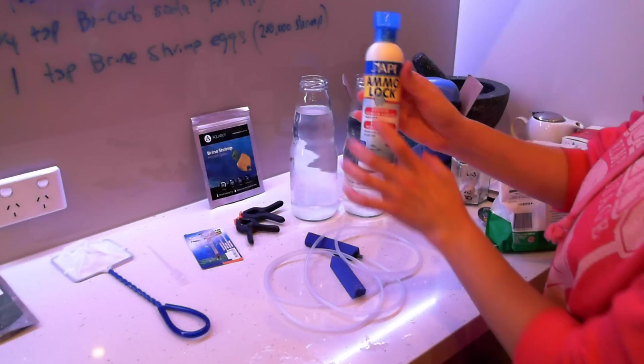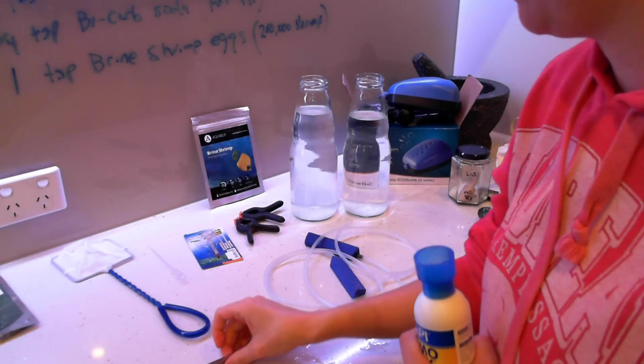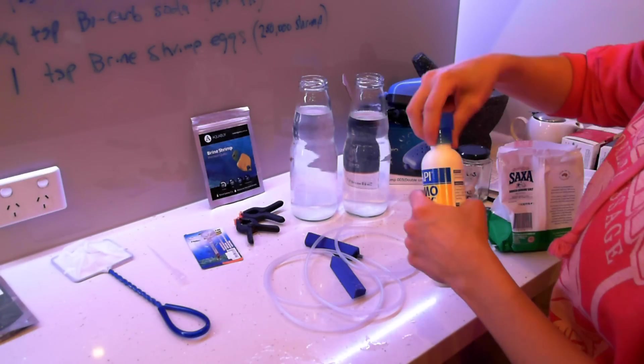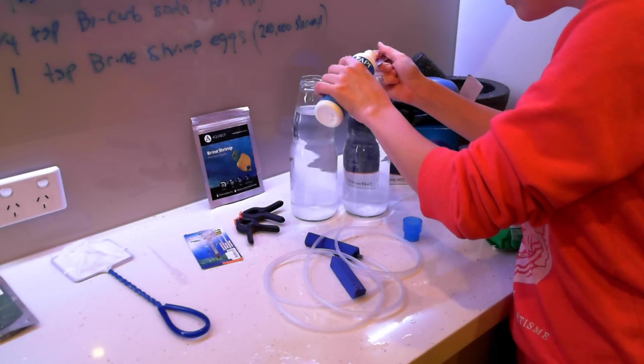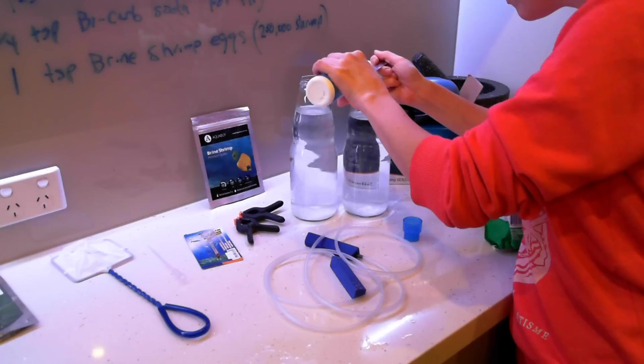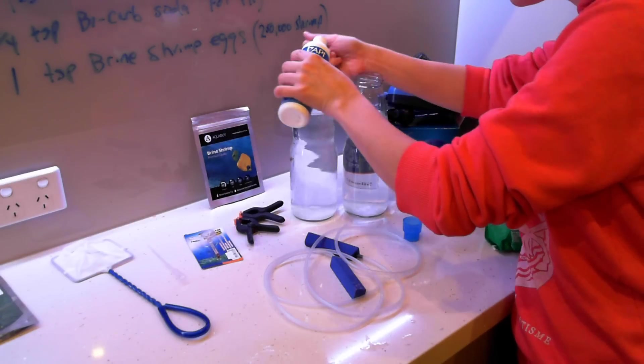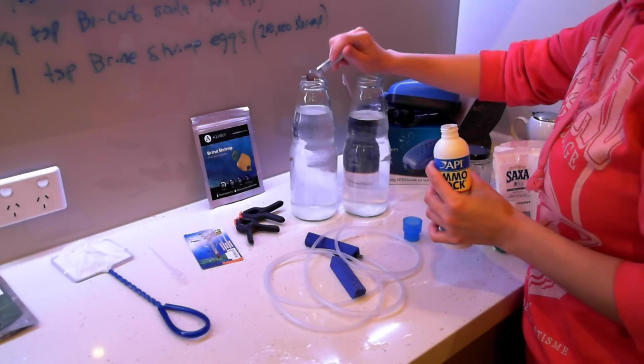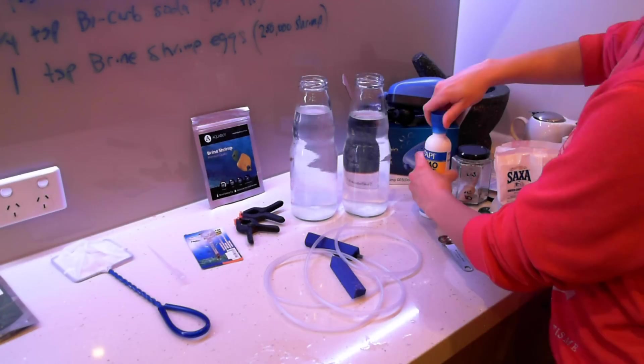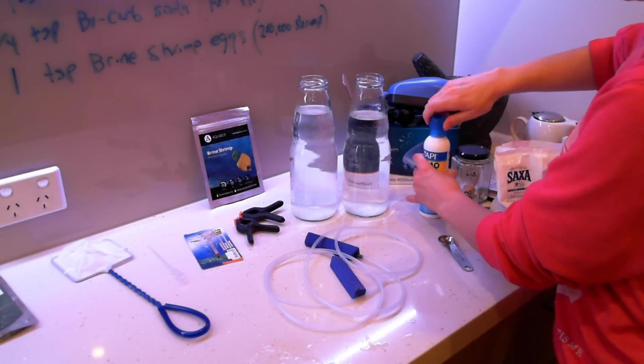Now we've come to our optional ingredient. I'm going to be adding a fourth teaspoon of our AmmoLock, just to control the ammonia, as I mentioned earlier in the video. Because I'm going to be raising them to adulthood, this just gets the ball rolling on controlling the output of toxins in the water. You can skip this step if you're just going to harvest the baby shrimp.